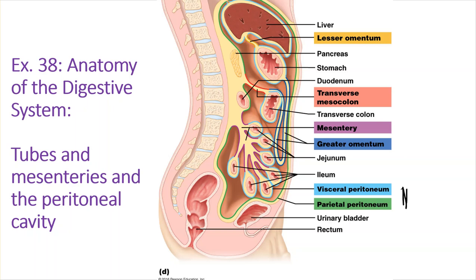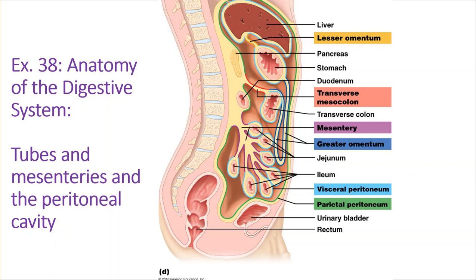I draw your attention to the visceral and parietal peritoneum. We've seen these before with the heart — the pericardium, parietal pericardium, visceral pericardium. The parietal lines the cavity and the visceral covers the organ. Another word for visceral peritoneum is serosa — the outer covering of the organ in the watery peritoneum. If a structure like the duodenum doesn't live in the watery area, it will have adventitia around it, not serosa.